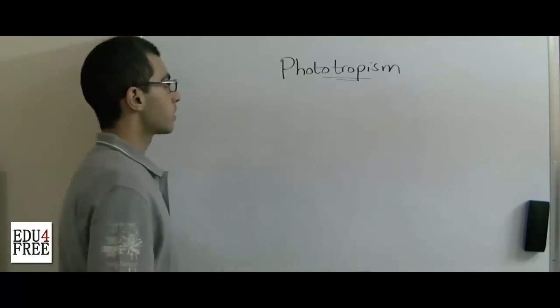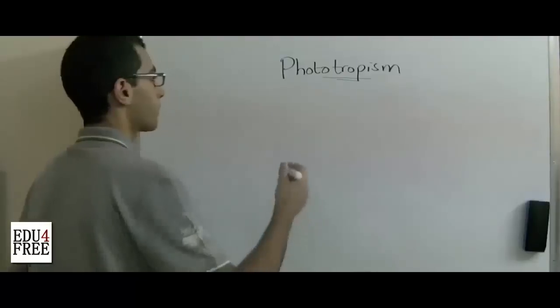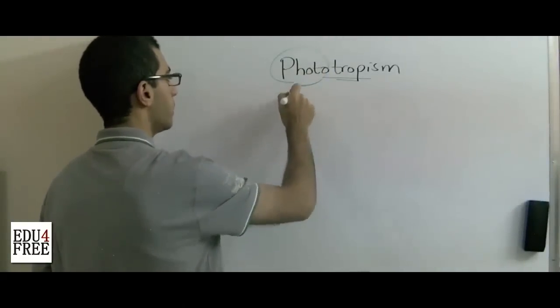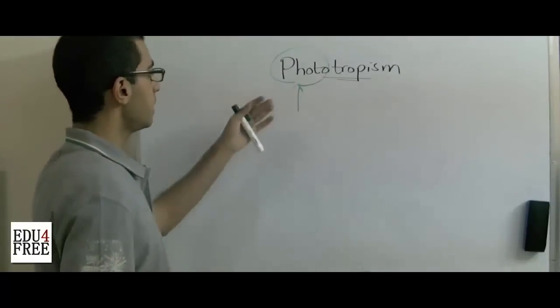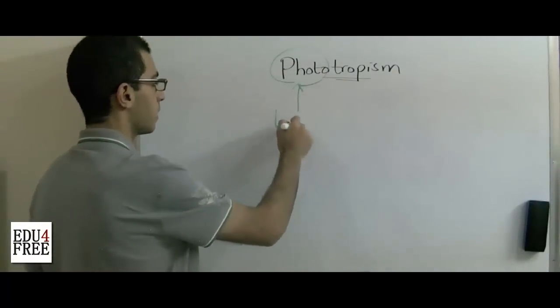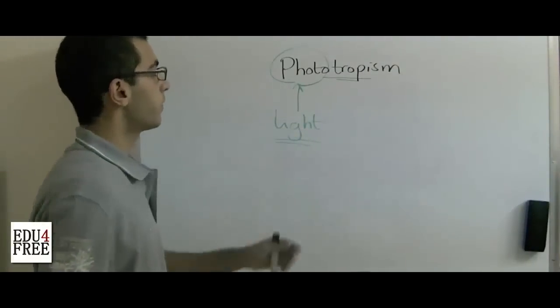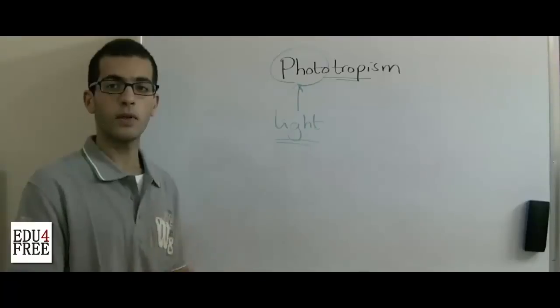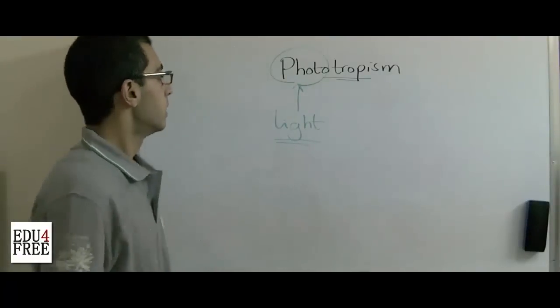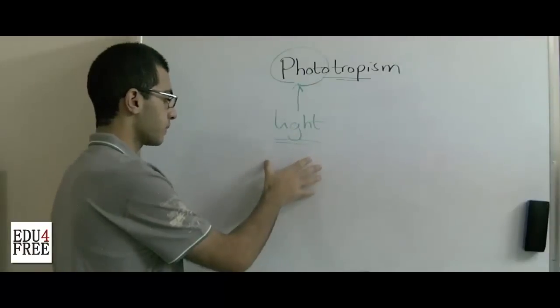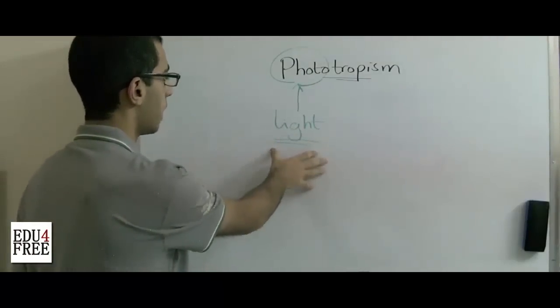So first we will talk about phototropism. Whenever we see the word 'photo' here, we know that it's related to light. So phototropism is the curvature which occurs in the plant due to the different distribution of light.